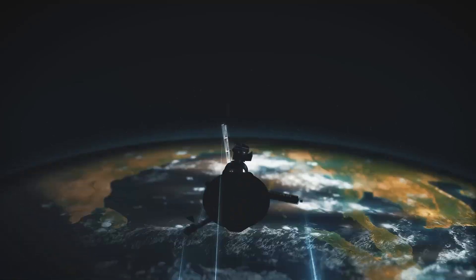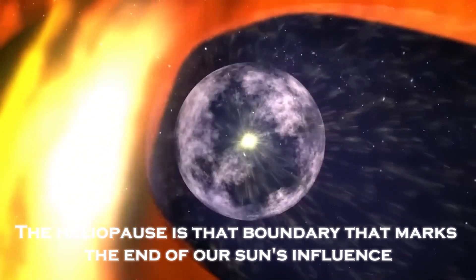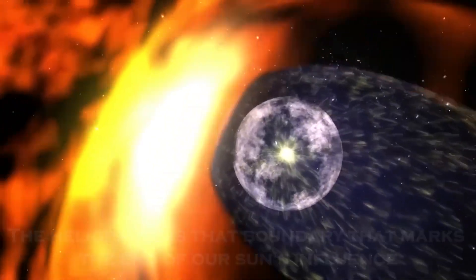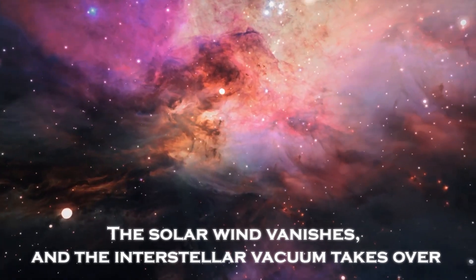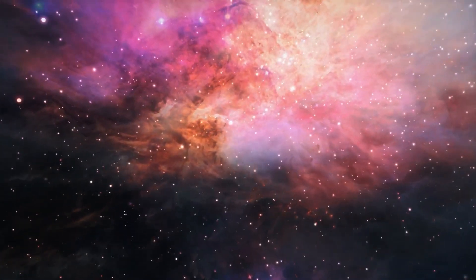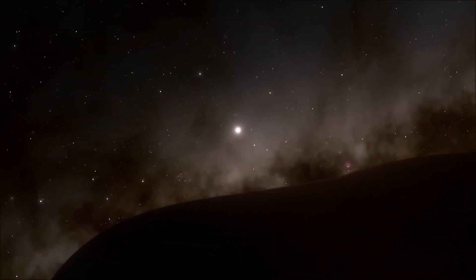It has detected something at the edge of our solar system, something scientists never imagined. The Heliopause is that boundary that marks the end of our sun's influence. Beyond this barrier, the solar wind vanishes and the interstellar vacuum takes over. But what does it really mean to cross this boundary? What lurks on the other side?